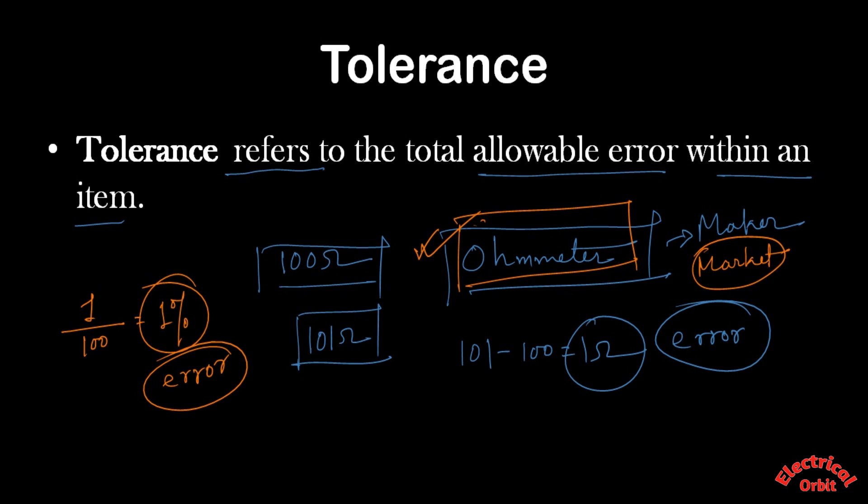It can give 1% plus error or 1% minus error - both are possible. It can give 101 ohm or 99 ohm reading. In both cases the error range is 1%. So suppose we are measuring with this ohm meter a different resistance...